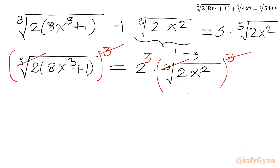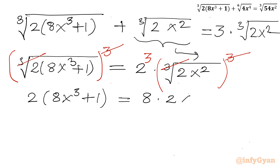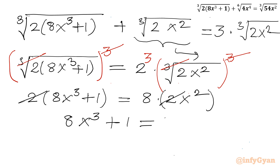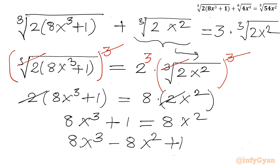After cubing both sides, the LHS becomes 2(8x³ + 1) and the RHS becomes 8 times 2x². We can cancel the factor of 2 on both sides, giving us 8x³ + 1 = 8x². Rearranging: 8x³ − 8x² + 1 = 0. This is a cubic equation.